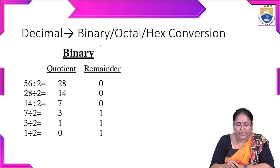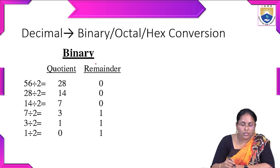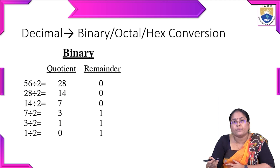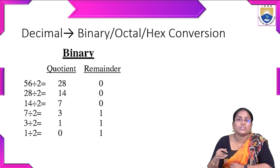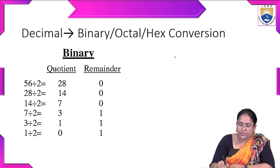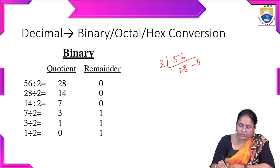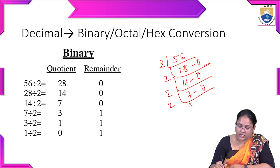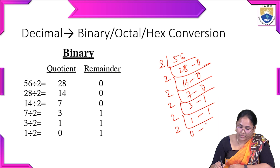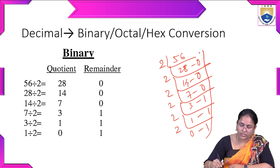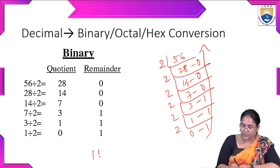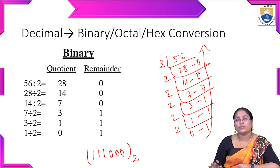Finally, let us look at decimal-to-binary, octal, and hexadecimal conversion. For 56 converted to binary: 56 ÷ 2 = 28 r0, 28 ÷ 2 = 14 r0, 14 ÷ 2 = 7 r0, 7 ÷ 2 = 3 r1, 3 ÷ 2 = 1 r1, 1 ÷ 2 = 0 r1. Reading bottom to top gives 111000 to base 2.